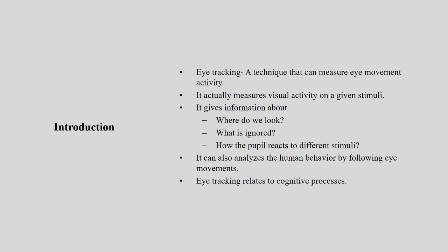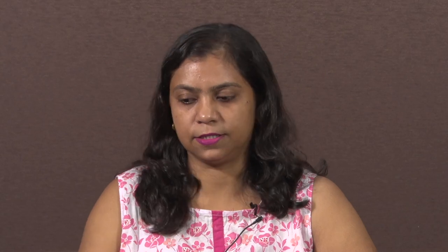It can also analyze human behavior by following eye movement and eye tracking related to cognitive processes — how we are thinking when we are looking at some object, what is the perception of that person about that particular object. That cognition is what we want to understand through this eye tracking system.